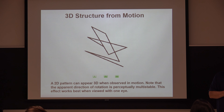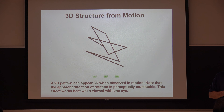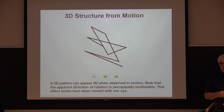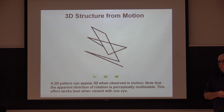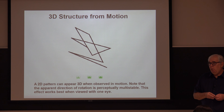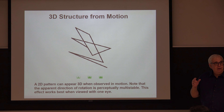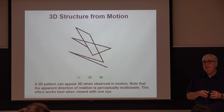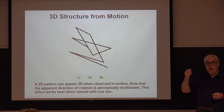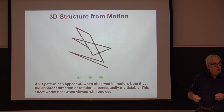Just to remind you what we've been doing so far in this middle section of the course: I've been identifying particular types of information such as texture, linear perspective, and shading. We've been analyzing what are the models that exist to try and describe how we're able to derive information from those different sources, and we're going to do the same thing today.